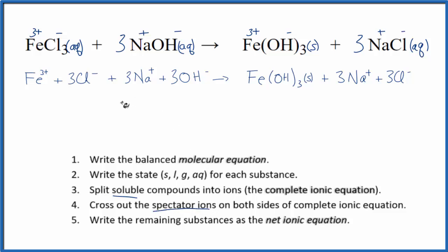We can cross out the spectator ions. These are the ions that appear on both sides. When we do net ionic equations, we're interested in what changed. So I have three Cl minuses here and three here. They didn't change, so I'm not interested in those as a chemist. We have three Na plus ions and three here. They didn't change, so I'm going to cross them out. And that'll leave us with the net ionic equation for FeCl3 plus NaOH.